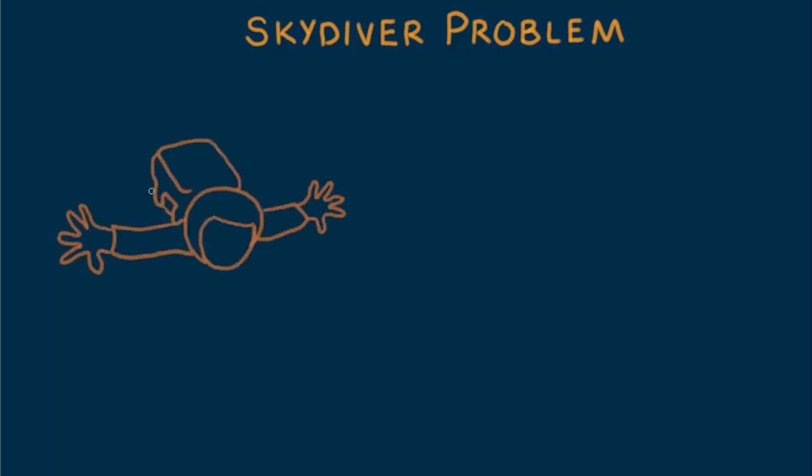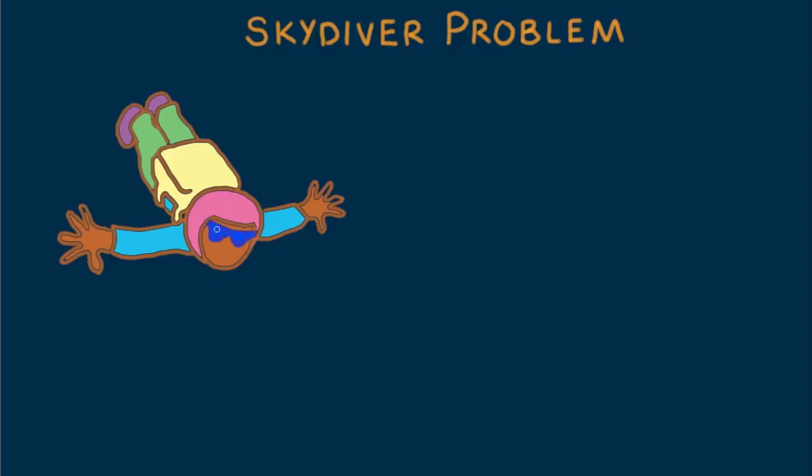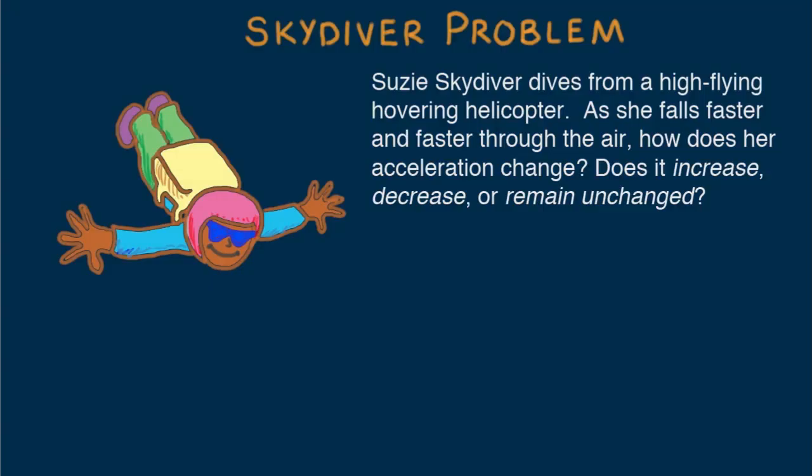Here's a problem that involves some insights and nicely illustrates Newton's second law. Susie Skydiver dives from a high-flying hovering helicopter. As she falls faster and faster through the air, how does her acceleration change?